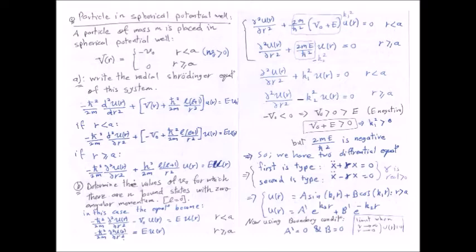In general, for a second-order linear ODE, we use the associated polynomial equation, substituting each derivative with x to the corresponding power to find the roots. If we have d²x/dr² + γx = 0 with γ real and positive, the roots are pure complex conjugates, and the solution is a linear combination: u(r) = A·sin(q₁r) + B·cos(q₁r).